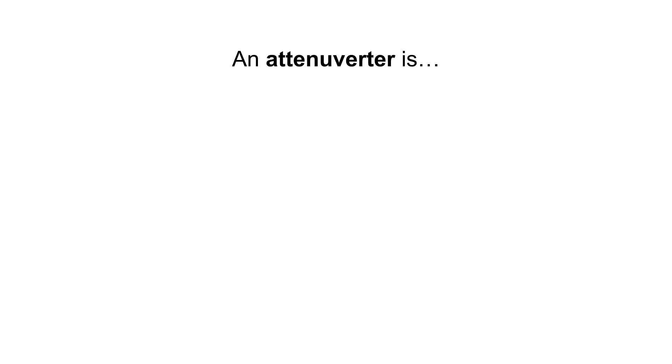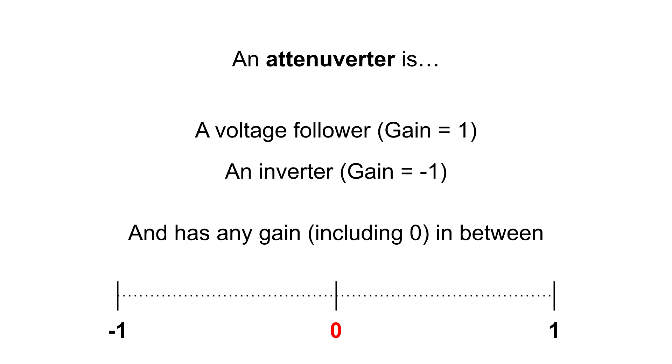An attenuverter is many things. First of all, it's a voltage follower with a gain of 1, an inverter with a gain of minus 1, and it's possible to set a gain in between these limits. This also includes a gain of 0.